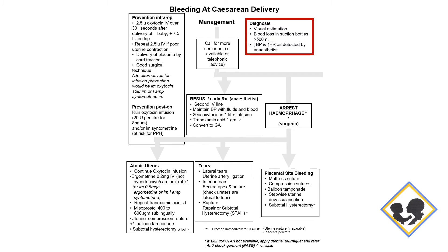This is the current version of the algorithm for bleeding at caesarean section, which should be displayed on theater walls so you don't have to memorize it. Look at how the diagnosis is made — the anesthetist may play a key role here. A low blood pressure in combination with an increased heart rate should prompt a team discussion about the possibility of bleeding, and that is enough to give tranexamic acid in some cases. That early diagnosis is very key to effective management.